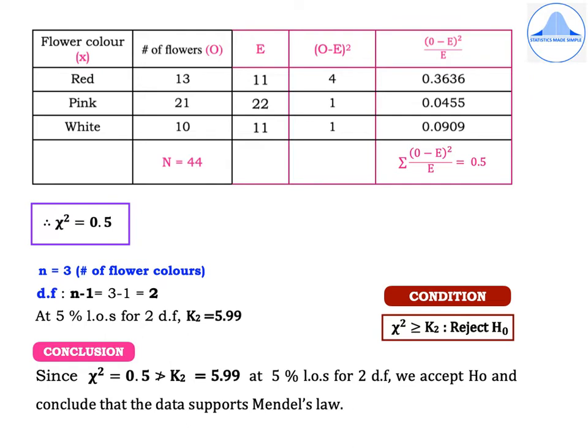The condition for the chi-square goodness of fit right-tail test is: reject H₀ if chi-square is greater than or equal to K₂, otherwise accept H₀. Since chi-square equals 0.5 is not greater than K₂ equal to 5.99, at 5% level of significance for 2 degrees of freedom, we accept H₀ and conclude that the data supports Mendel's law.